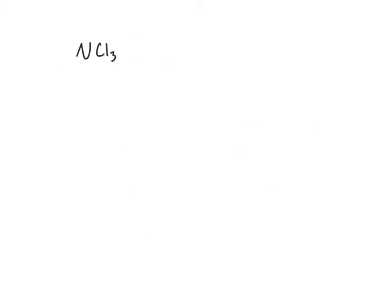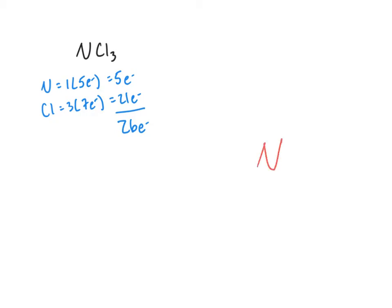Let's look now at a Lewis structure for NCl3. Again, we start by counting our electrons. We have one nitrogen atom, which comes with five valence electrons. We have three chlorine atoms, which each come with seven valence electrons, which tells us that we have a total of 26 electrons to place around this molecule. We'll start by writing in our central atom, nitrogen, and then connect all outer atoms with single bonds. That's six electrons used, so we have 20 more.